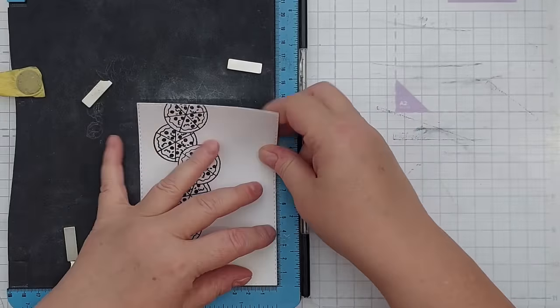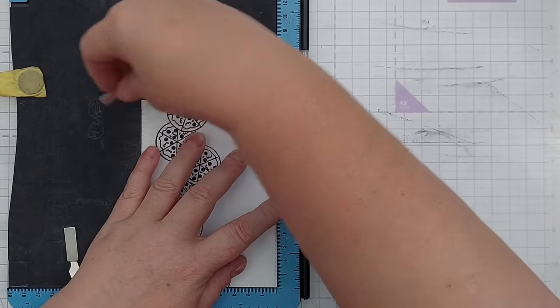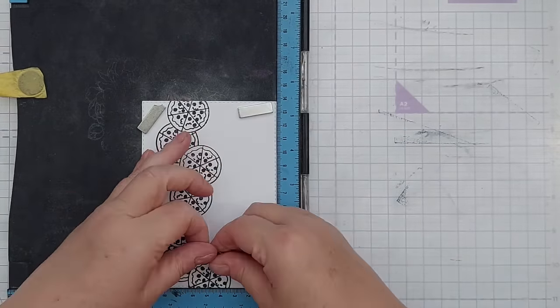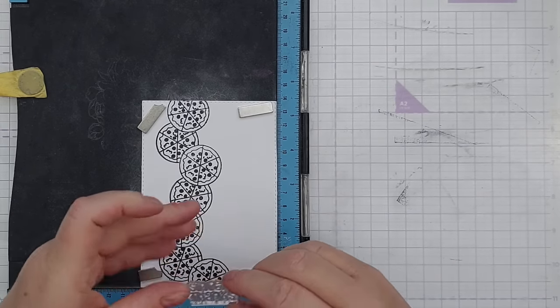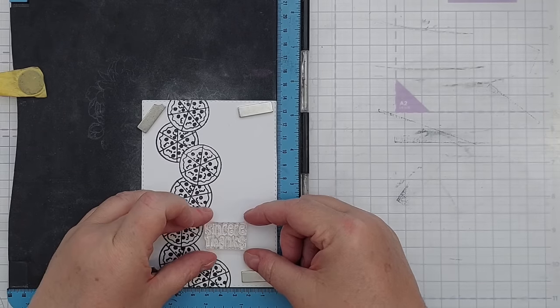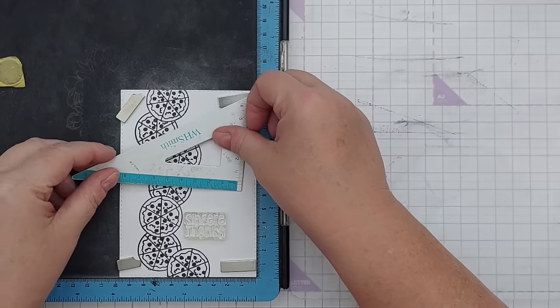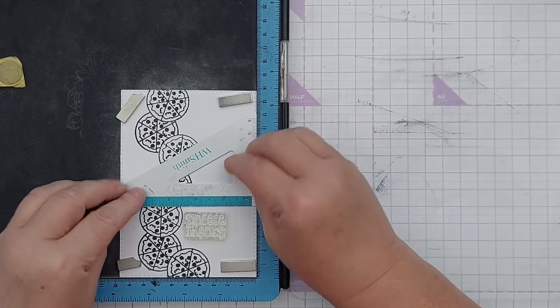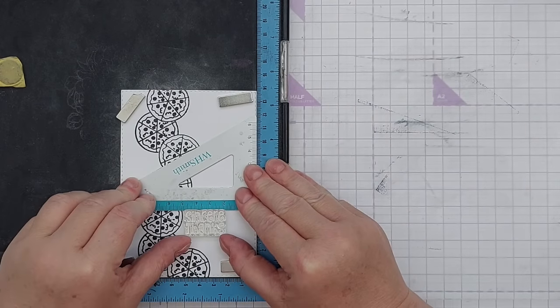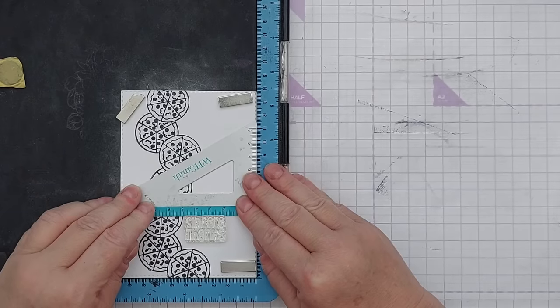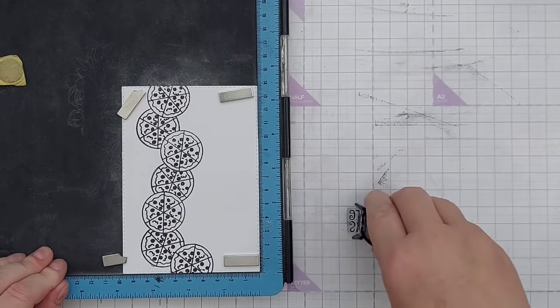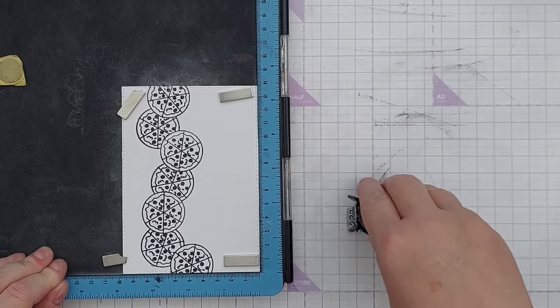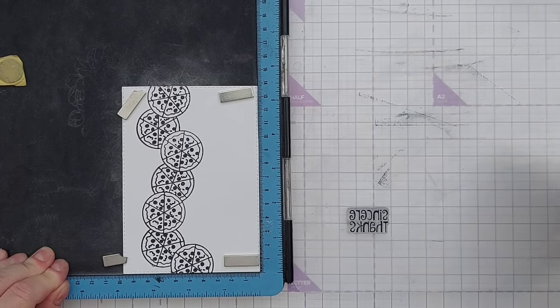Before I do anything else, I'm going to add my sentiment. I'm using my stamp positioner for this just because it'll help me line it up. I'm going to turn this pizza themed card into a thank you card. This is a fun bouncy font that says 'sincere thanks' and I'll use Memento Tuxedo black ink for this.